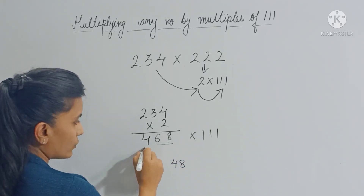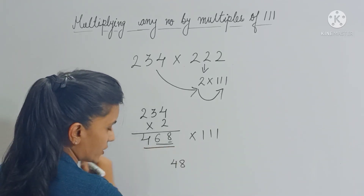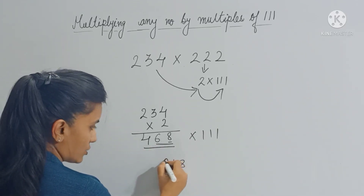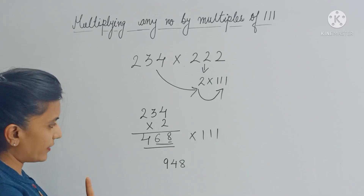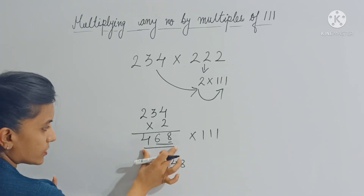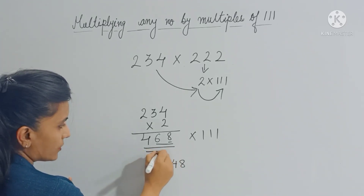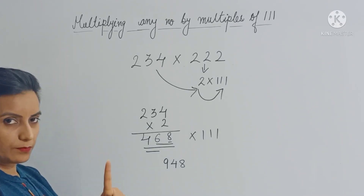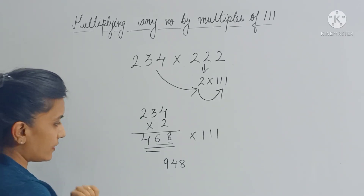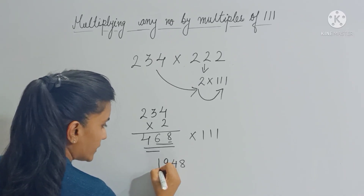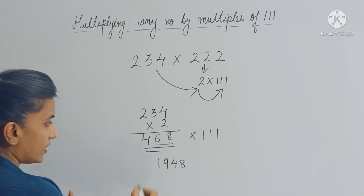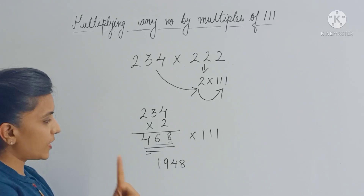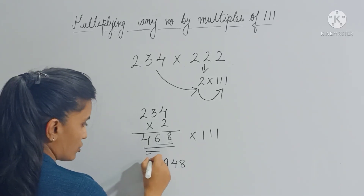Now add these three digits, you get 18. 18 plus 1 carry is 19, so write 9 and carry forward 1. Now start reducing — add 4 and 6, you get 10. 10 plus 1 carry is 11, so write 1 here and carry forward 1. The last digit is 4, so 4 plus 1 gives you 5. This is your final answer.